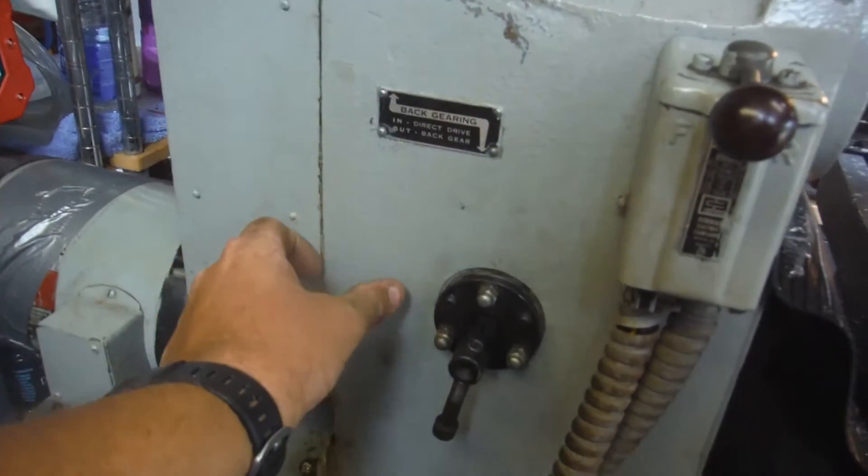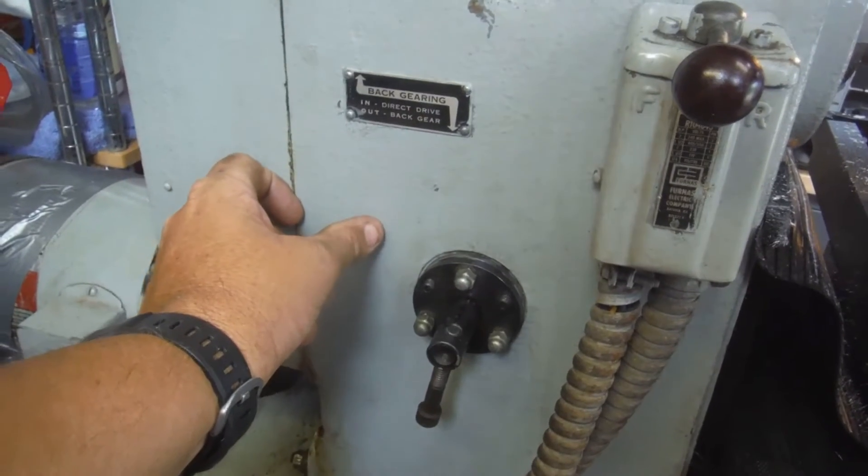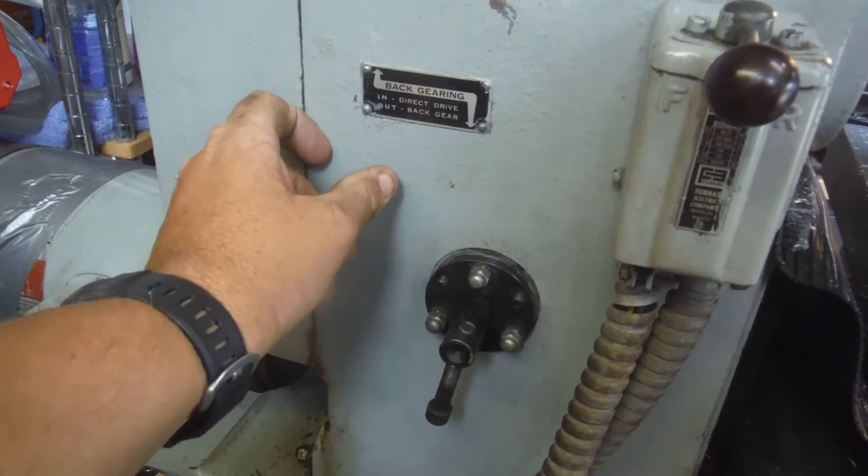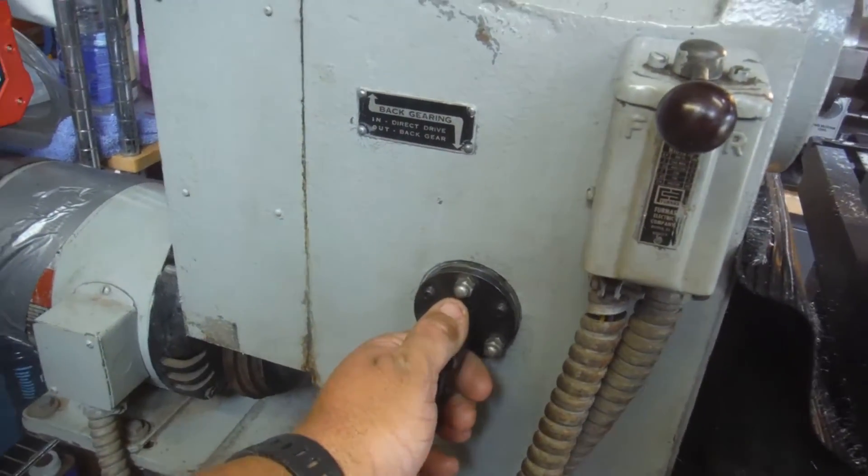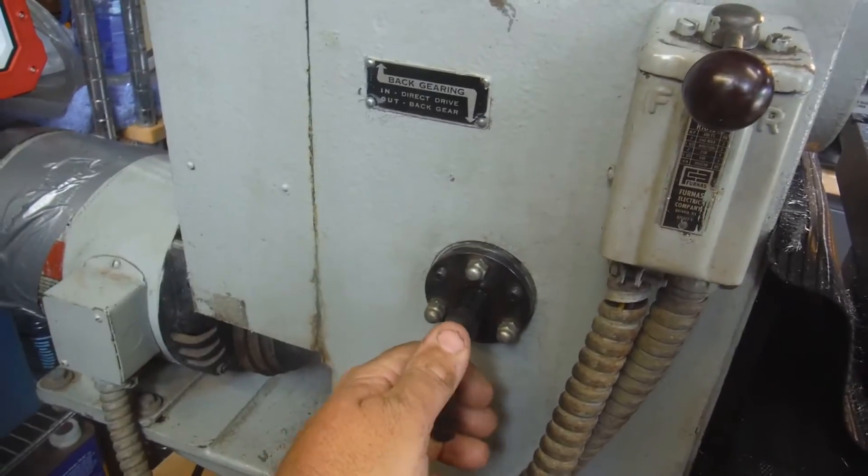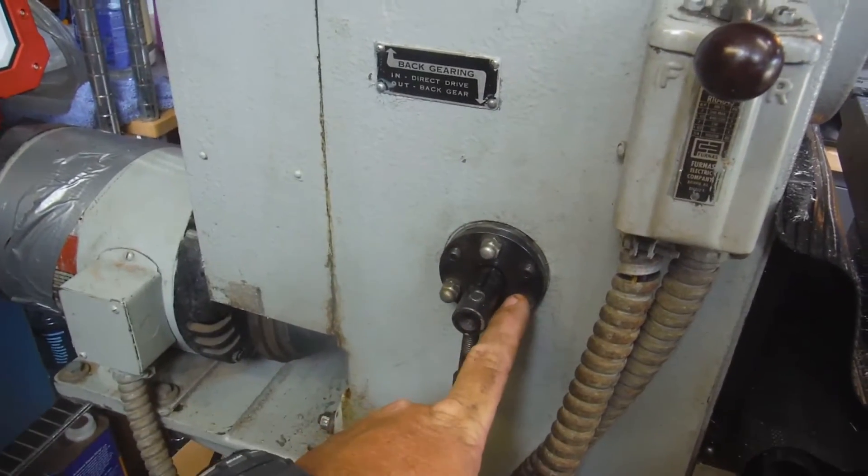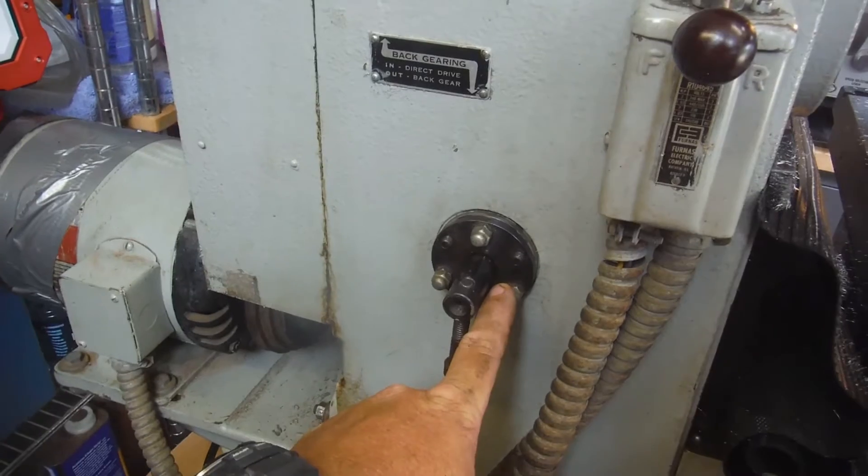In here there's a transmission with reduction gears. I call them reduction gears, Navy term, back gears. If you pull this handle out, which you'll notice it only goes so far and stops, I couldn't even get it to do that until last night when I disassembled this.